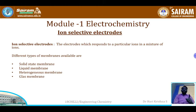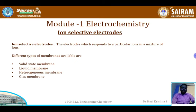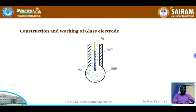When you dip the ion selective electrode into a mixture of n number of ions, it responds to only one specific ion. There are different types of membranes available: solid state membrane, liquid membrane, heterogeneous membrane, and glass membrane. We will focus only on the glass membrane — the glass electrode.